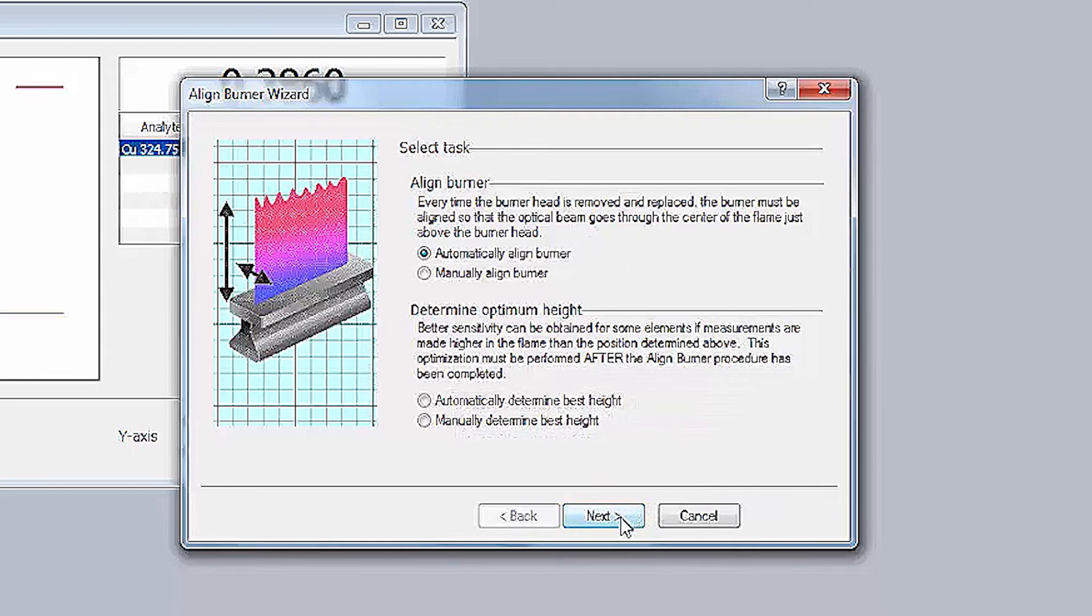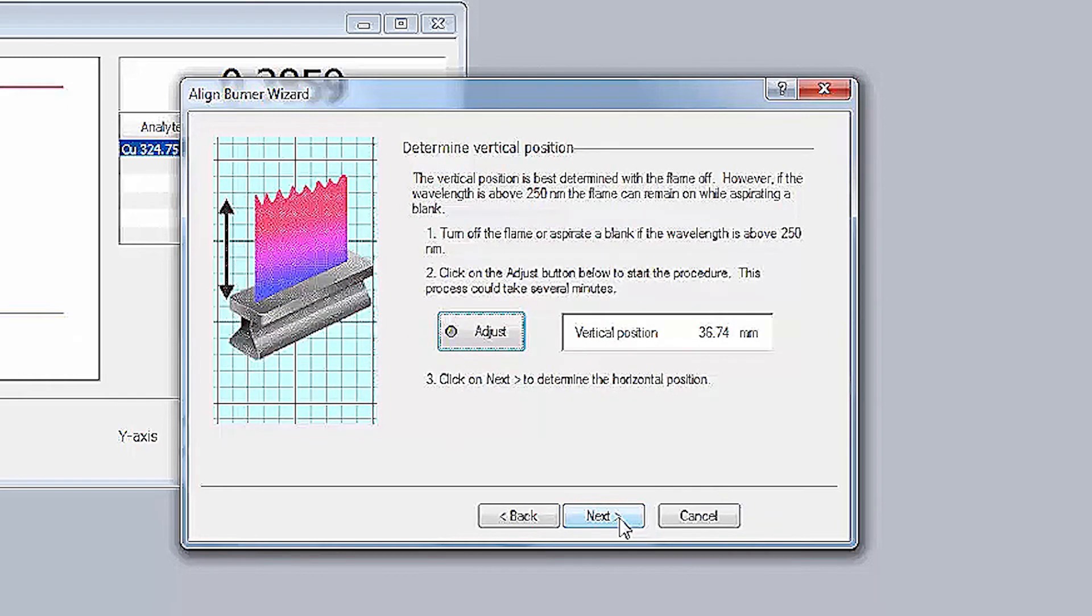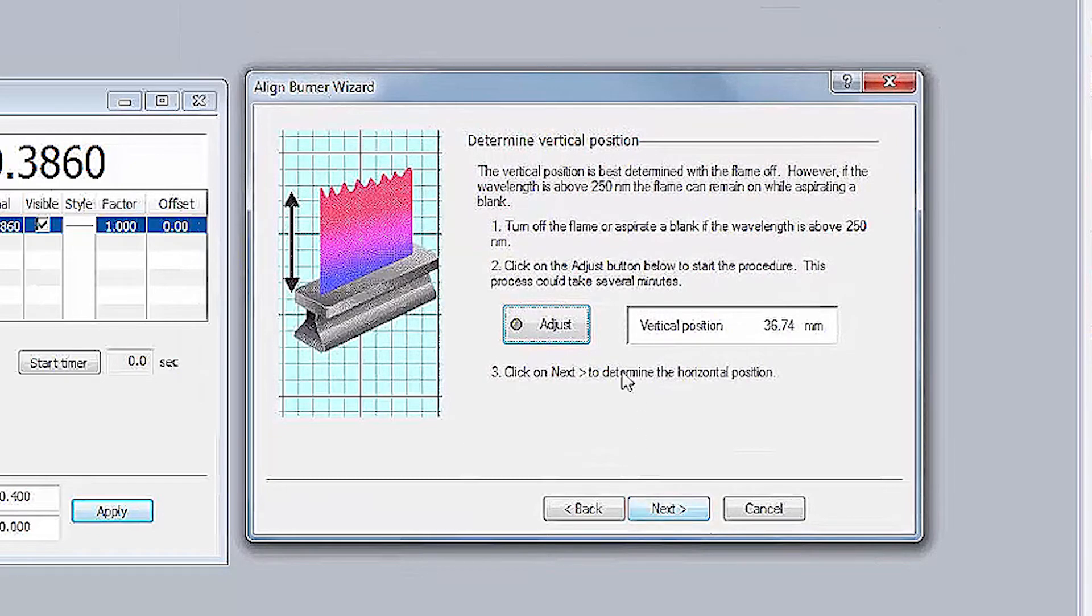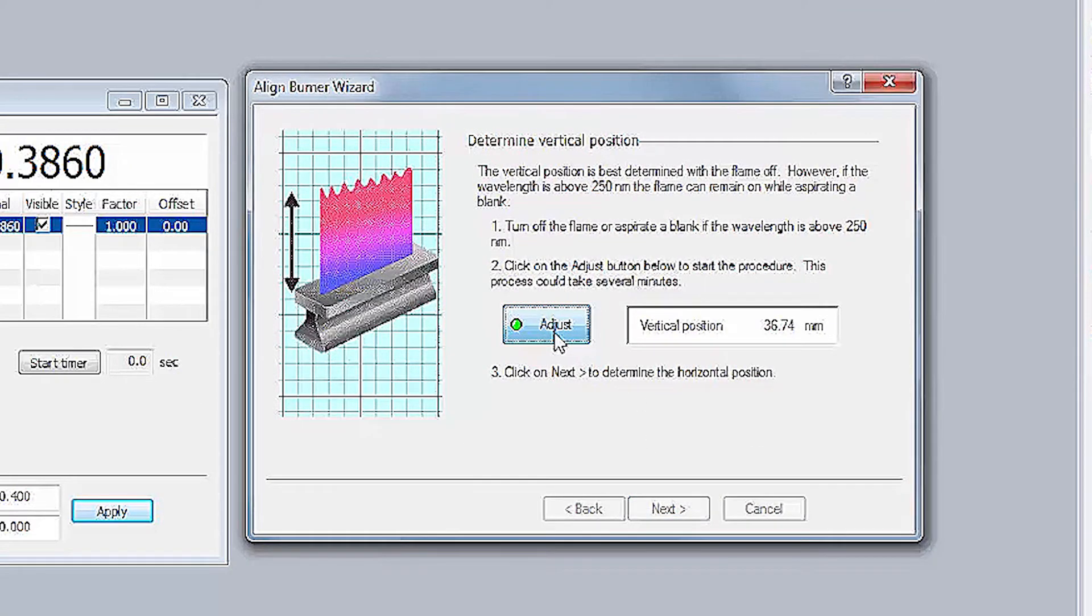Click Next to start the Auto Alignment Wizard. As you can see here, the Alignment Burner wizard first guides you to align the vertical position of the burner. As indicated by the wizard, this position is best determined with the flame off. Click on the Adjust button to automatically align the burner's vertical position.